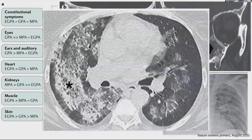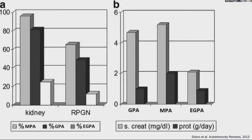As far as kidney involvement is concerned, it's much more common in MPA than GPA, and more than EGPA, and so is RPGN. When you look at figure B, MPA patients are much more likely to have higher creatinine and proteinuria. When you biopsy them, you're more likely to see more fibrotic changes.